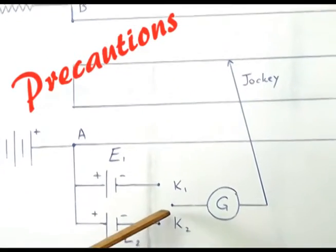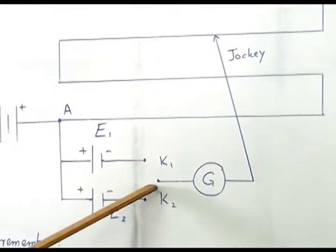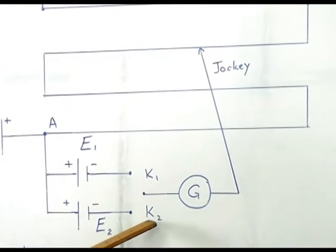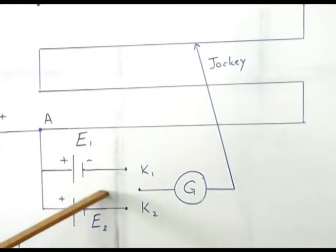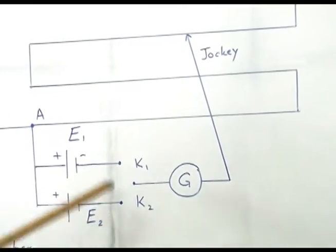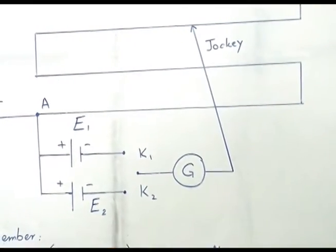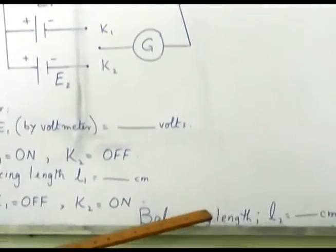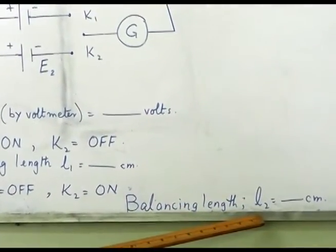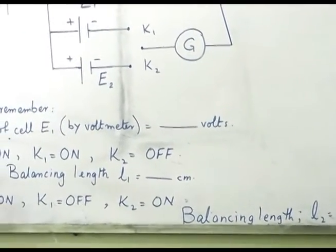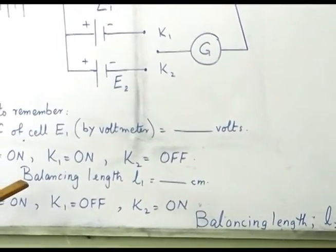And when we insert the plug key here, or in other words, when we turn on K2, we are including cell E2 in the circuit. So, this is the condition for finding balancing length L2. These are the two points which we have to remember in order to find L1 and L2.